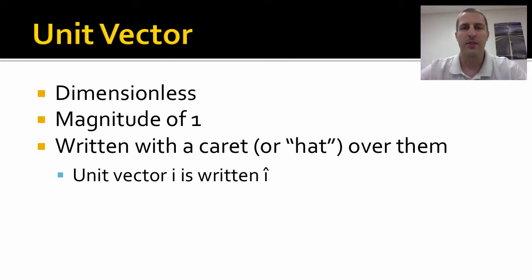We use these vectors so that we know what direction something's going, without affecting the length of whatever it is we're talking about. The way we write them is we write them with a little hat over it, this little caret on top of the unit vector such as unit vector i, written with an i hat. We just call it i hat.